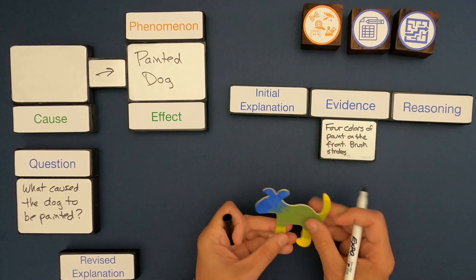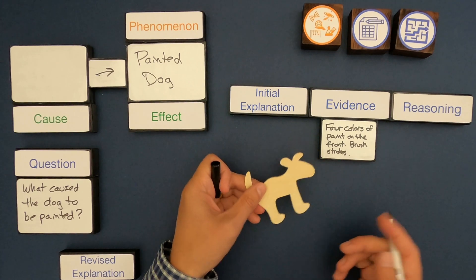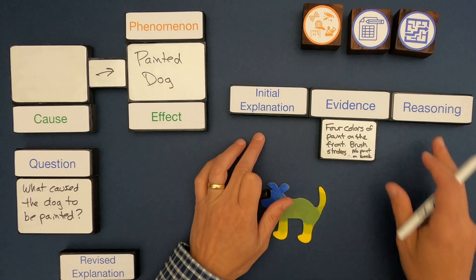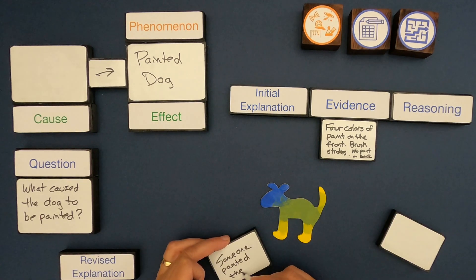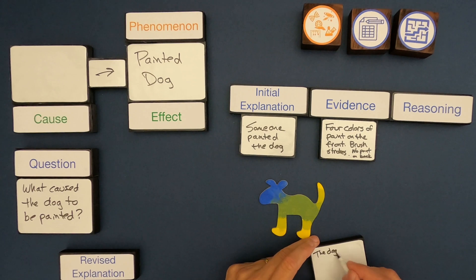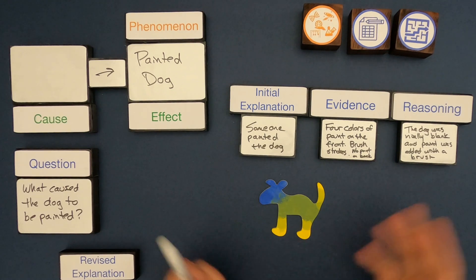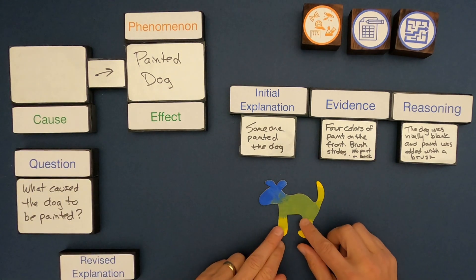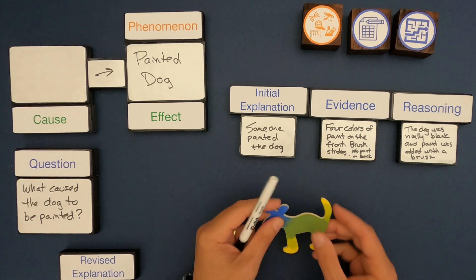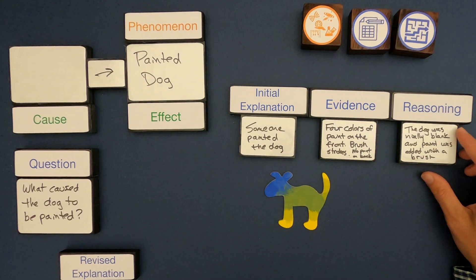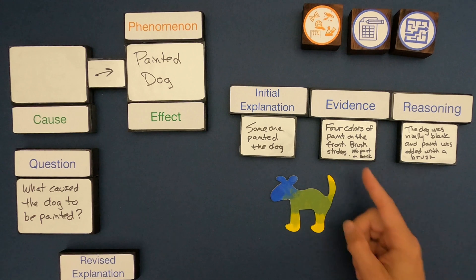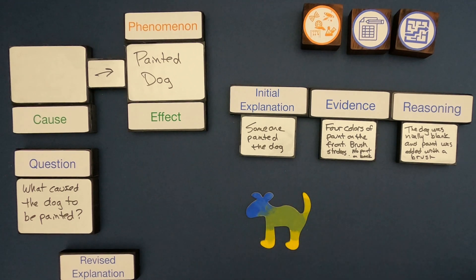I've got evidence: four colors of paint on the front, brush strokes, and no paint on back. So my initial explanation is that someone painted the dog — that's the cause. I've got four colors of paint on the front, brush strokes on the front, and no paint on the back. My reasoning: it shows that the dog was initially black and then paint was added later, applied with some kind of brush, accounting for the brush strokes. This is just my initial explanation with evidence.